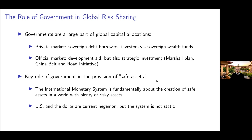These sovereign wealth funds might have a very different value function and different incentives to invest than private smaller investors. There is also the official market — government to government flows. There's always been development aid, but there are also very large strategic investments — think of the Marshall Plan from the US, or China's Belt and Road initiative right now. These might have very different motives from the traditional risk-taking we put in our models. But in the data, they are very meaningful parts of global capital flows, and there's a lot of interesting work going on right now trying to understand that.